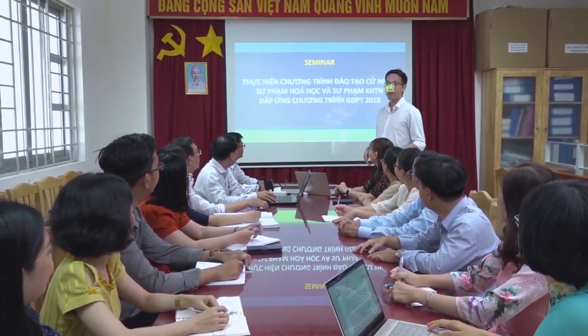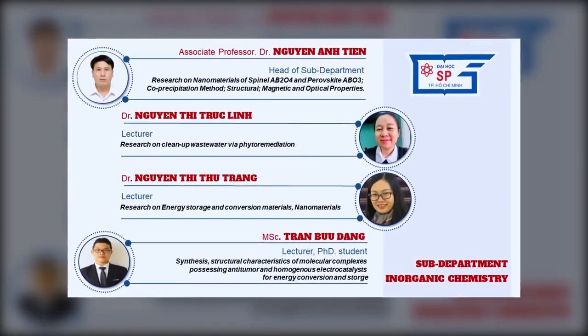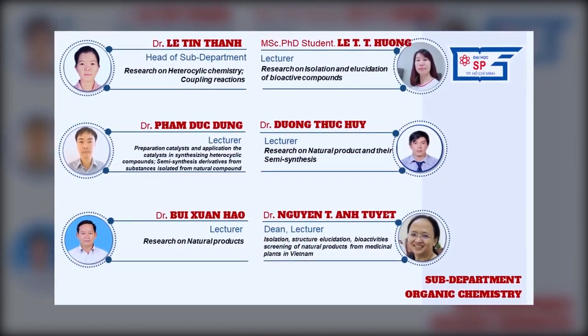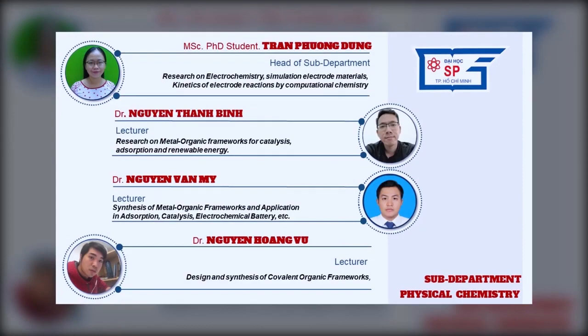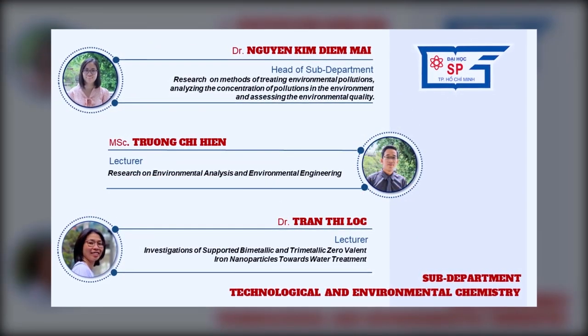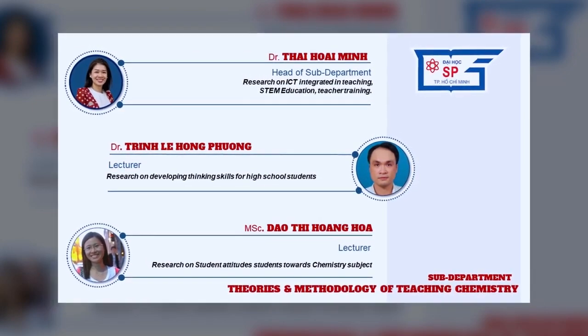Currently, the Department of Chemistry has six sub-departments: Organic Chemistry, Inorganic Chemistry, Analytical Chemistry, Physical Chemistry, Technological and Environmental Chemistry, and Theories and Methodology of Teaching Chemistry.